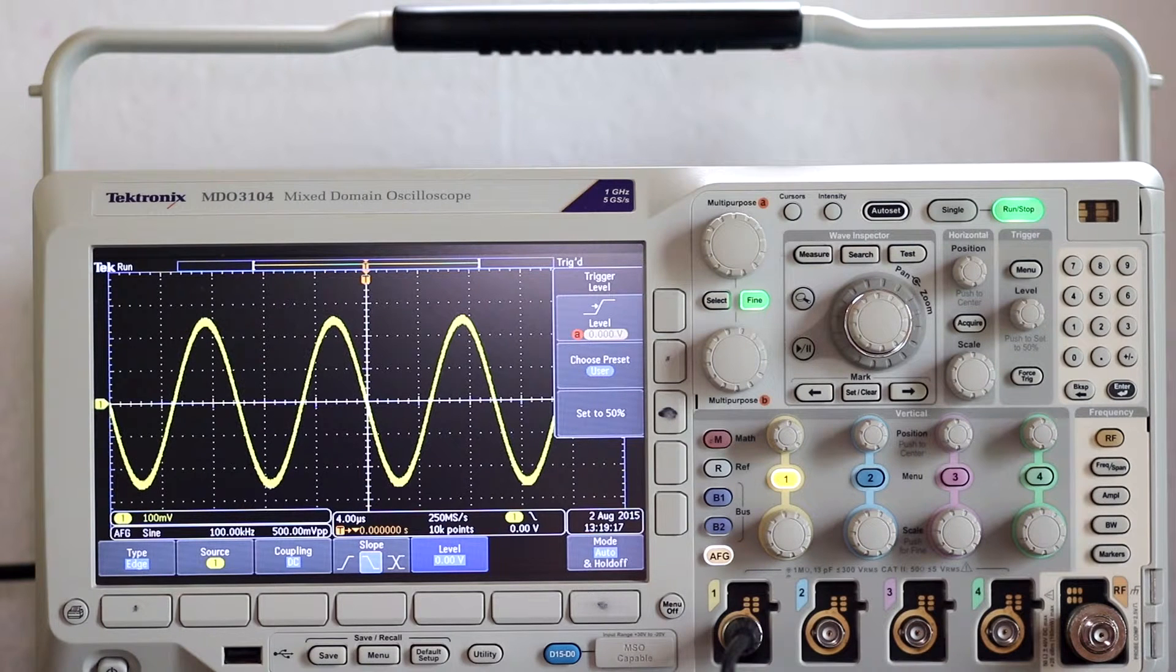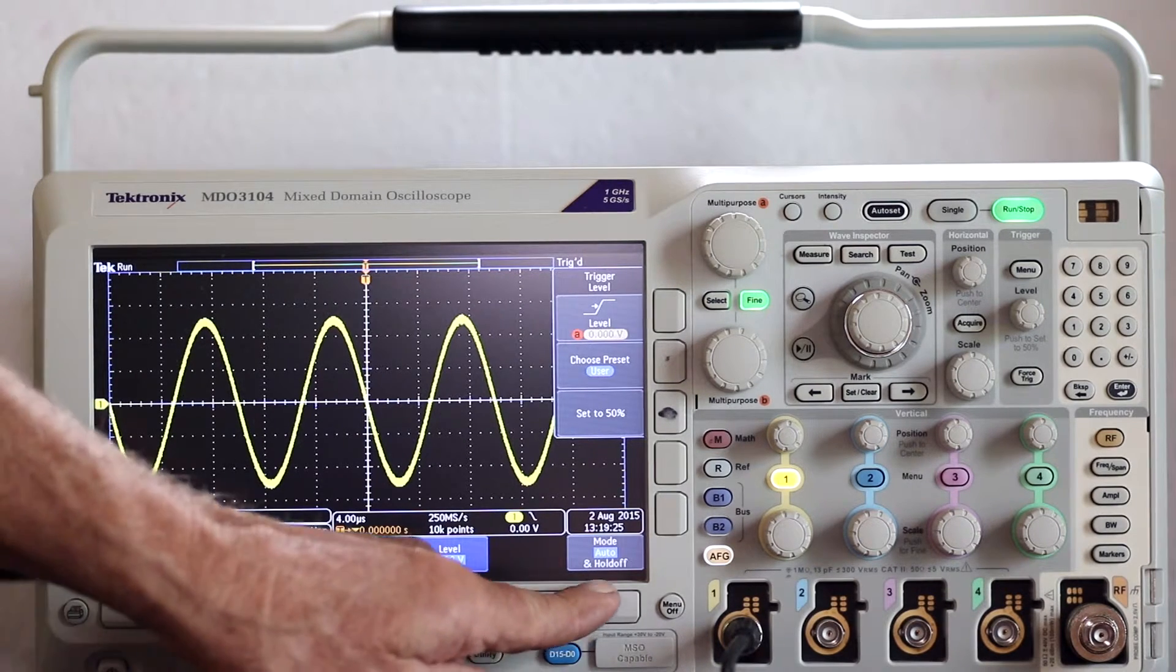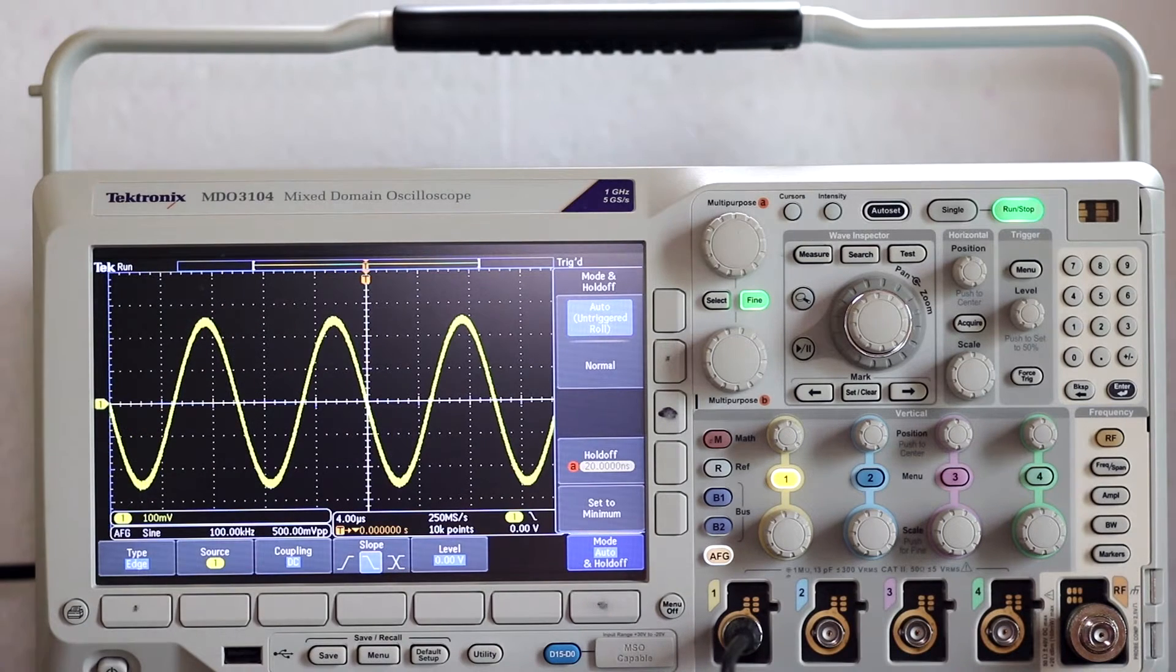Holdoff is very simple to use. Press the last soft key to the right in the horizontal row above the display. This brings up the holdoff menu bar to the right of the display. Press the second soft key to place the instrument in normal mode.